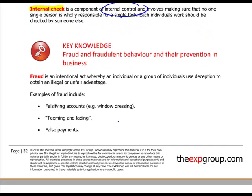Next is the concept of fraud and fraudulent behaviour. Fraud is an intentional, deliberate act whereby an individual or group uses deception to obtain an illegal or unfair advantage. Examples include falsifying the accounts — for example window dressing — and the concept of teeming and lading.